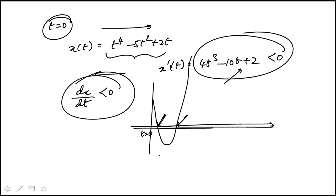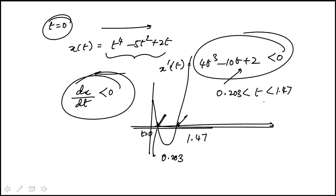If you read those two points off, they are 0.203 and 1.47, which means that t between 0.203 and 1.47 satisfies this condition. That corresponds to answer choice B.